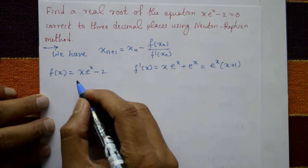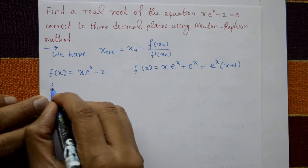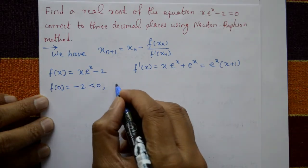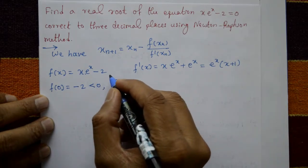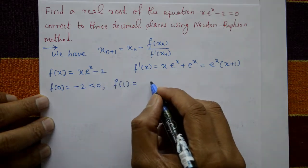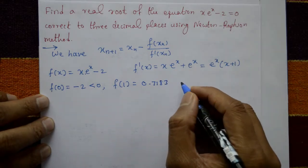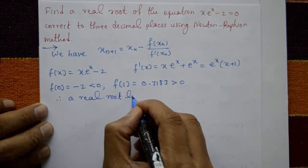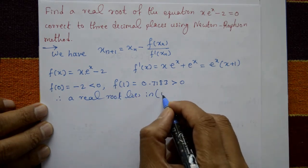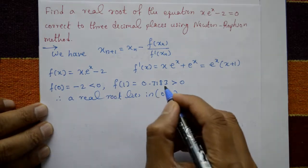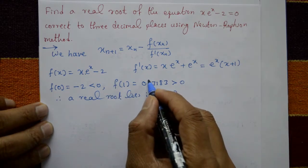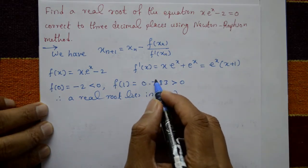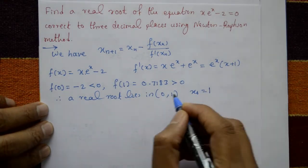Now find the initial value x₀. Put x = 0: f(0) = 0·e⁰ minus 2 = minus 2, which is less than 0. Put x = 1: f(1) = 1·e¹ minus 2 = 0.7183, which is greater than 0. Therefore a real root lies between 0 and 1. Since f(1) = 0.7183 is closer to 0, we take x₀ = 1.